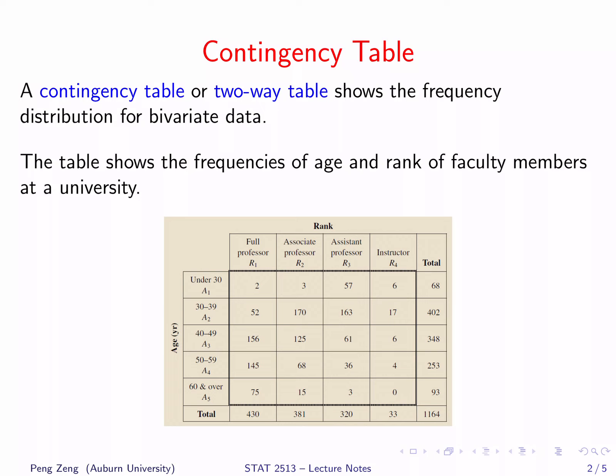We have two variables: age of the faculty member and rank of the faculty member. For age, we have five different age categories. For rank, we have four different rank categories. The table lists the frequency or count of faculty members falling in each age-rank combination.